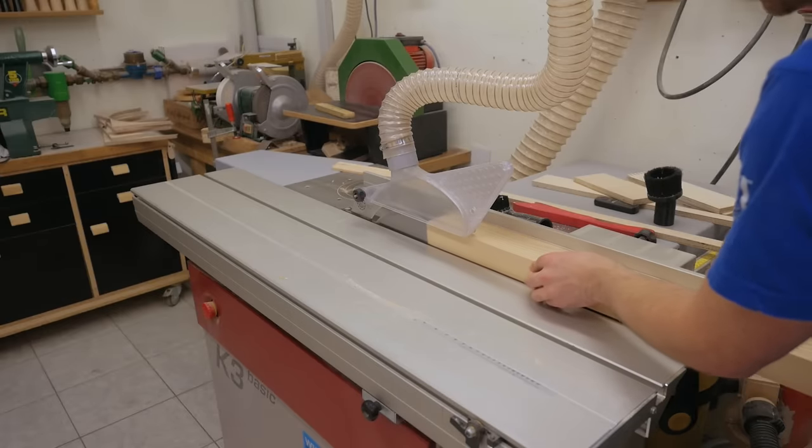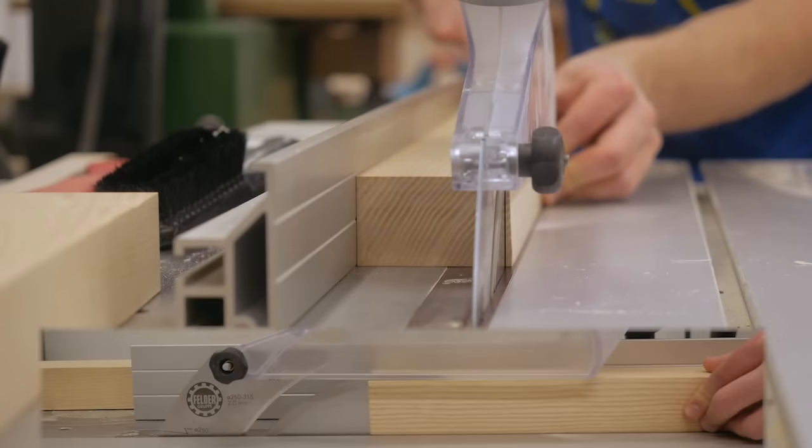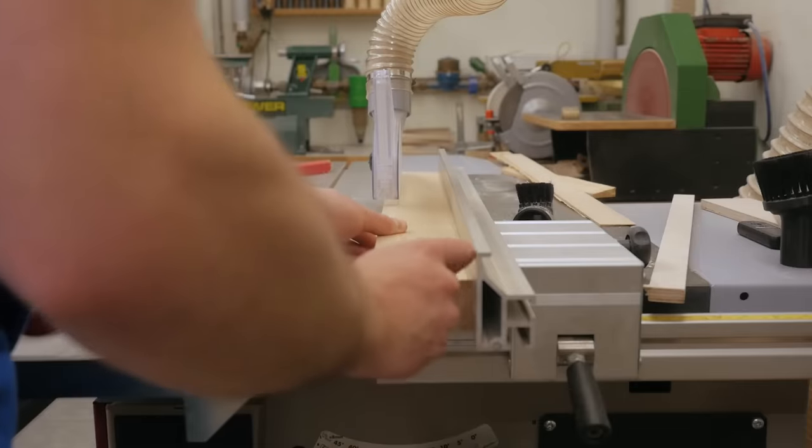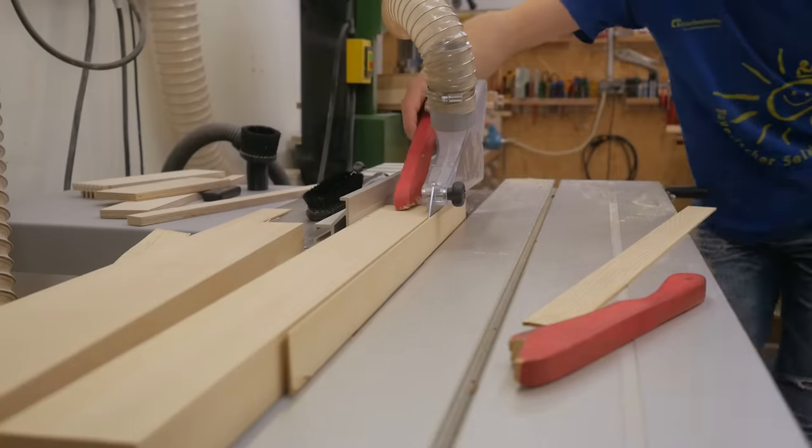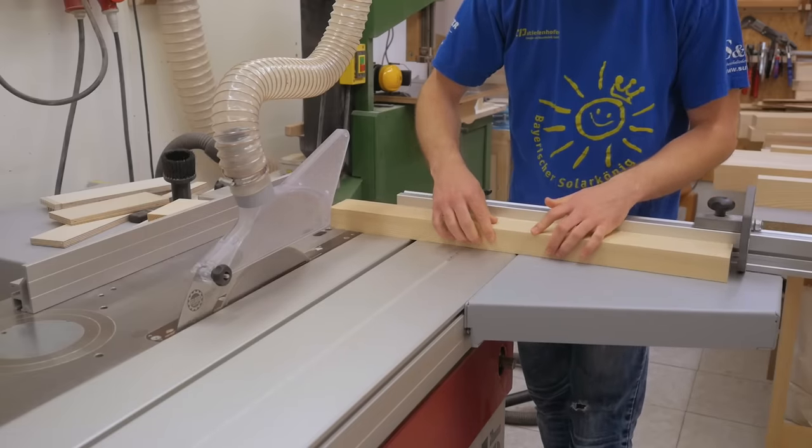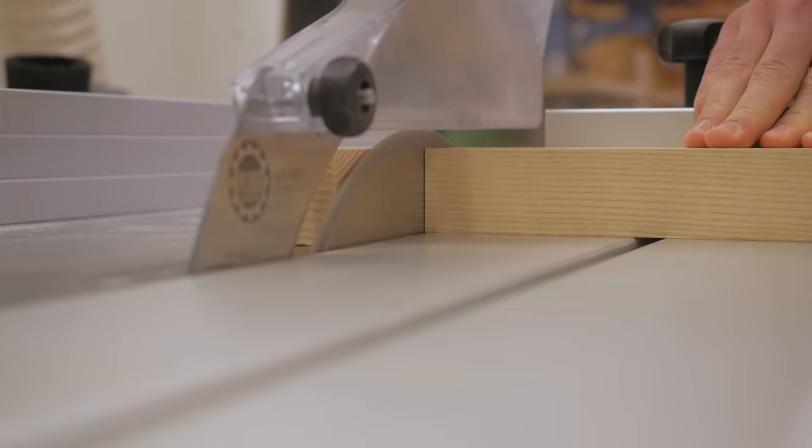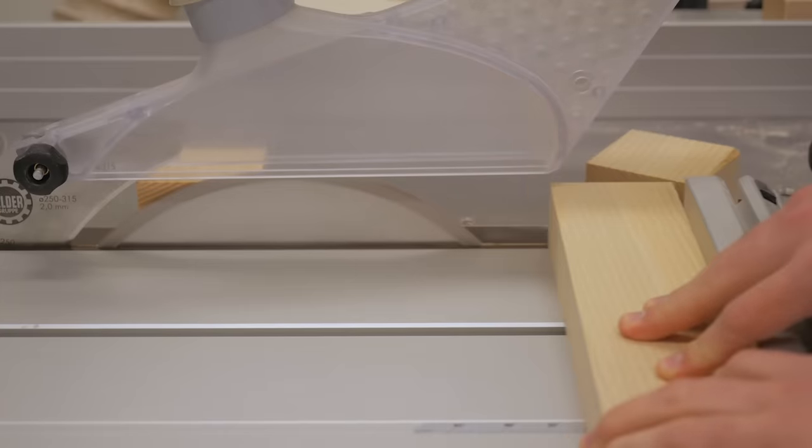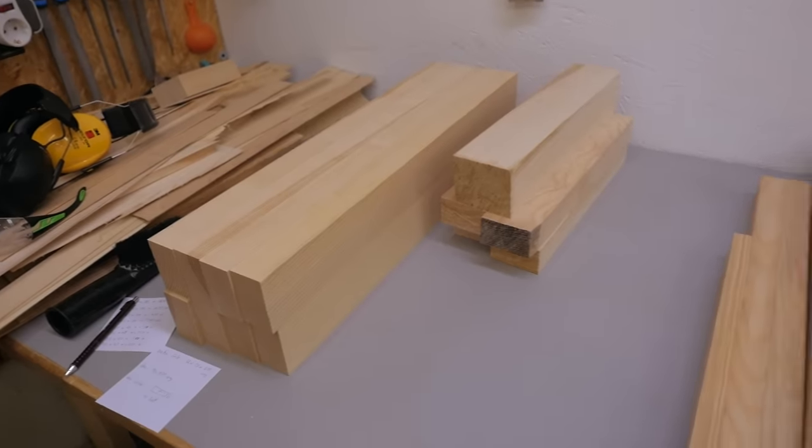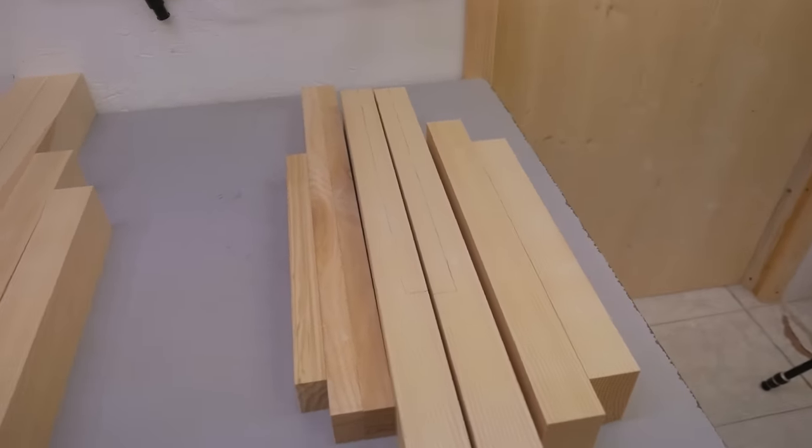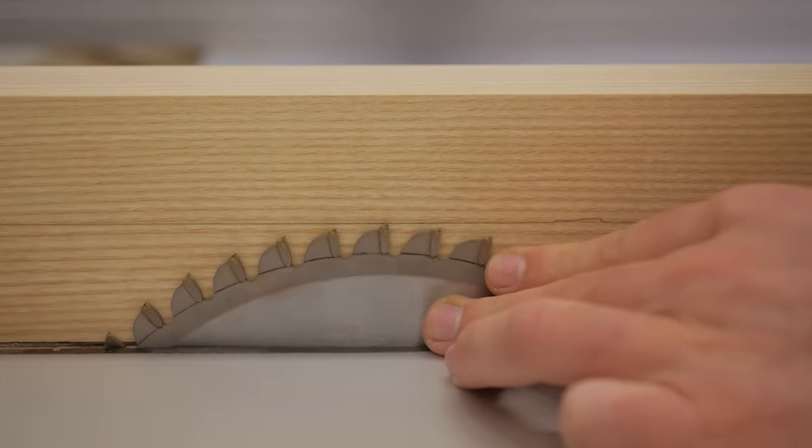The final width then again on the table saw. Parts for the scissors, parts for the top frame, parts for the bottom frame. Some of them still need a few cutouts and I need to make them before I glue them together.